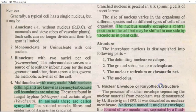Now we look at the structure of the nucleus — what structures are associated with it. The interphase nucleus can be distinguished into the following structures: a delimiting nuclear envelope or nuclear membrane, the ground substance called nucleoplasm, the nuclear reticulum or chromatin net — the level at which DNA is arranged in the cell — and finally the nucleolus.